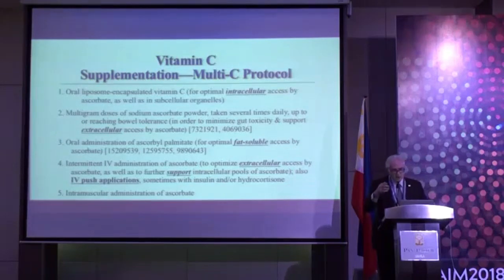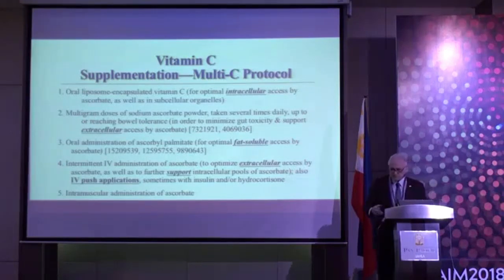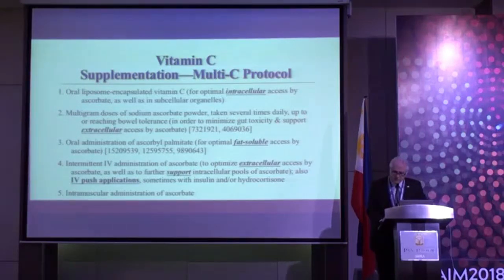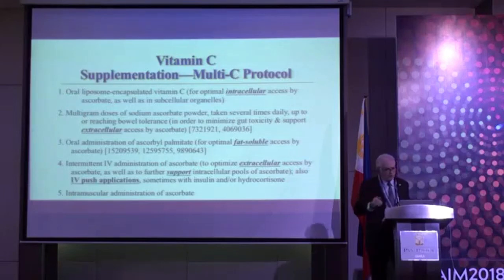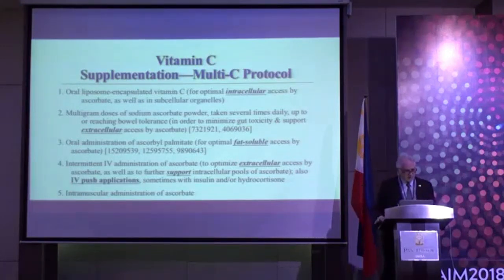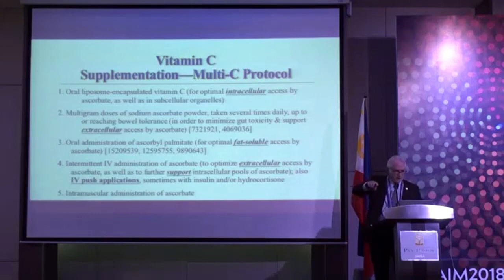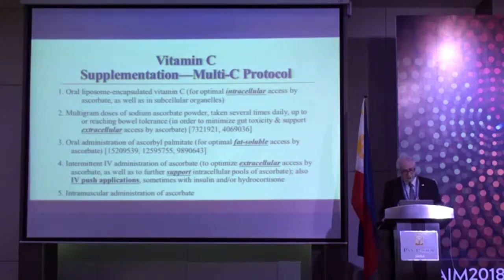Taking one to three grams a day of liposomal C is like taking 15 to 16 grams of regular C. Number two is sodium ascorbate — work up to roughly your bowel tolerance dose and take close to that every day. For some people that's 5 grams, for others 15 or even 50 grams. It neutralizes toxins directly forming in your gut, and what does get absorbed goes straight to the rich supply of immune cells surrounding the gut. Ascorbyl palmitate is also good as a fat-soluble form.